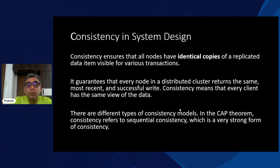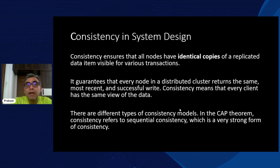Consistency plays a role where data accuracy across different nodes and servers is of super importance. In CAP theorem, consistency is a strong form — all copies in different data nodes should have the same data. There is also a loose form called eventual consistency that we'll cover later. But when CAP talks about consistency, it means all copies across the globe return the same data to whoever accesses them.